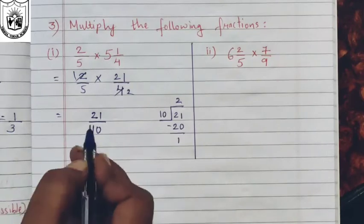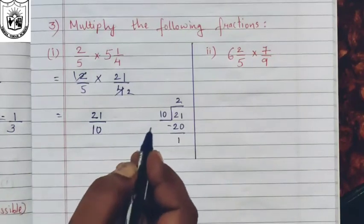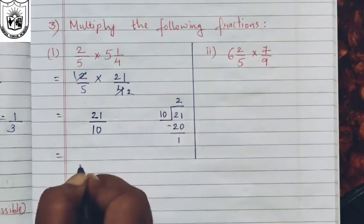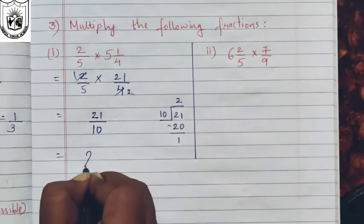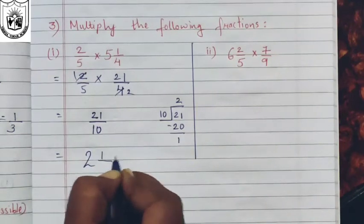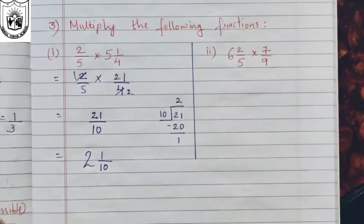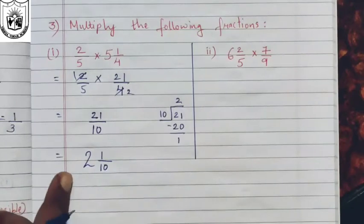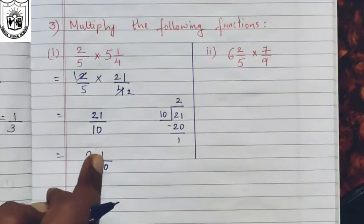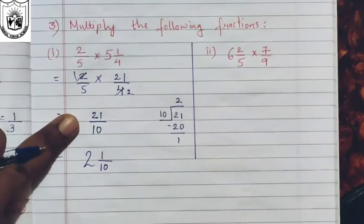Since it is an improper fraction you will have to convert it to a mixed fraction. After dividing, two will be your whole number, one will be your numerator, and ten will be your denominator — so 2 and 1/10. You can verify: ten times two are twenty plus one is twenty-one upon ten. We are getting back the same value.